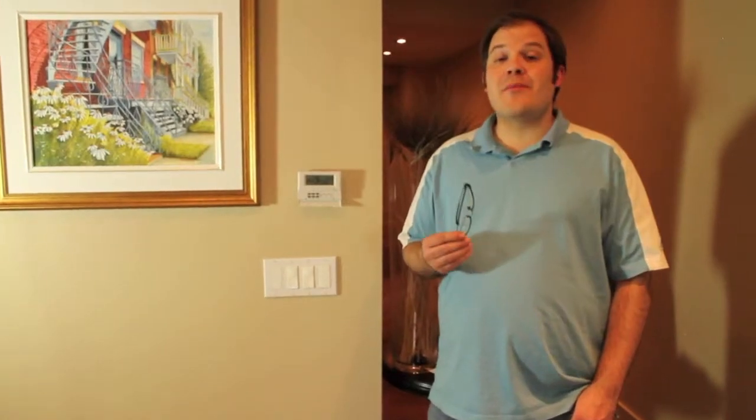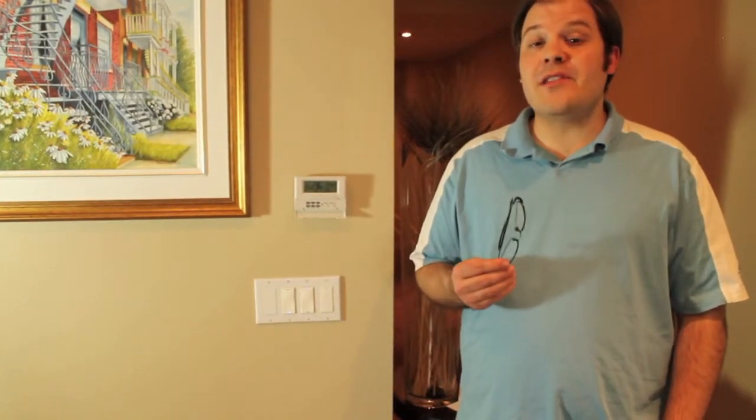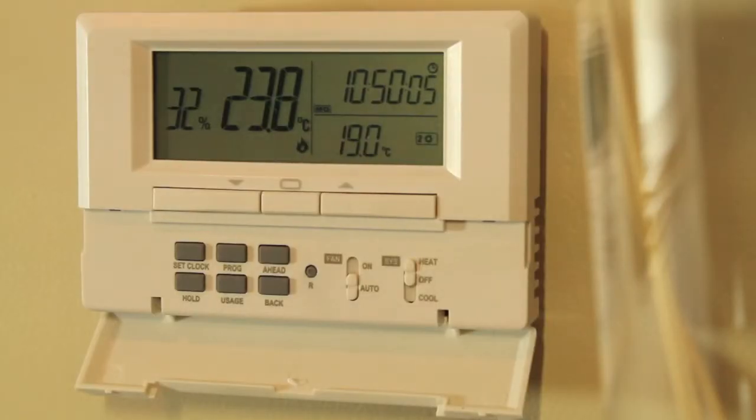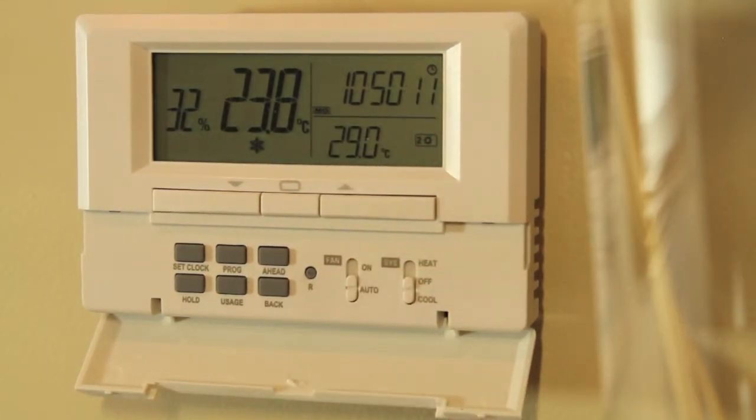Remember, lower temperatures save you energy and therefore money when you're heating. Higher temperatures save you energy when you're cooling. To program the cooling temperatures for your air conditioning, simply put the system switch to the cool position and repeat the same steps as we did for the heating.